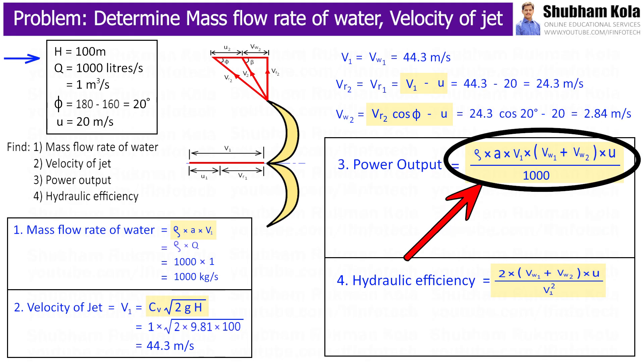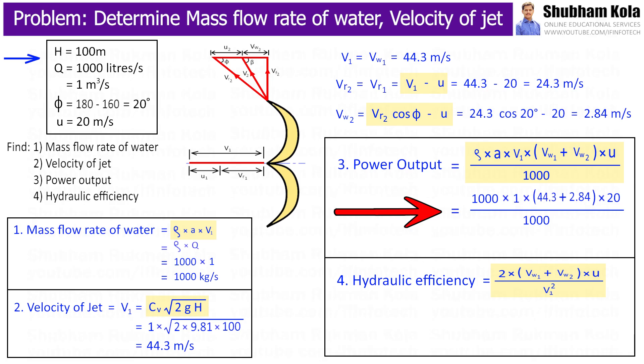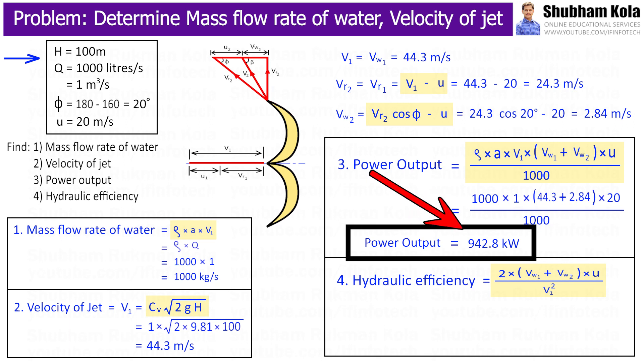So now we have all the values in order to calculate power output of turbine. Here I will put all these values, and by calculating this, we will get power developed equal to 942.8 kW.